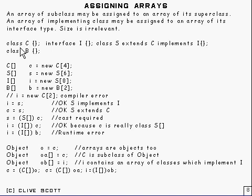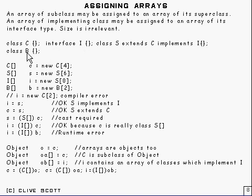To make it clearer, here's an example. I've put this all on one line to get everything in. So we've got a class here, an interface there, another class which extends that and implements that, and a completely separate class there. Here are some array variables I've created, and I've put something in them. Size is completely irrelevant.